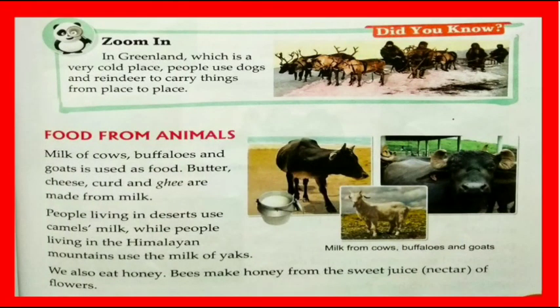Did you know? In Greenland, which is a very cold place, people use dogs and reindeer to carry things from place to place. Food from animals: milk of cows, buffaloes, and goats is used as food.